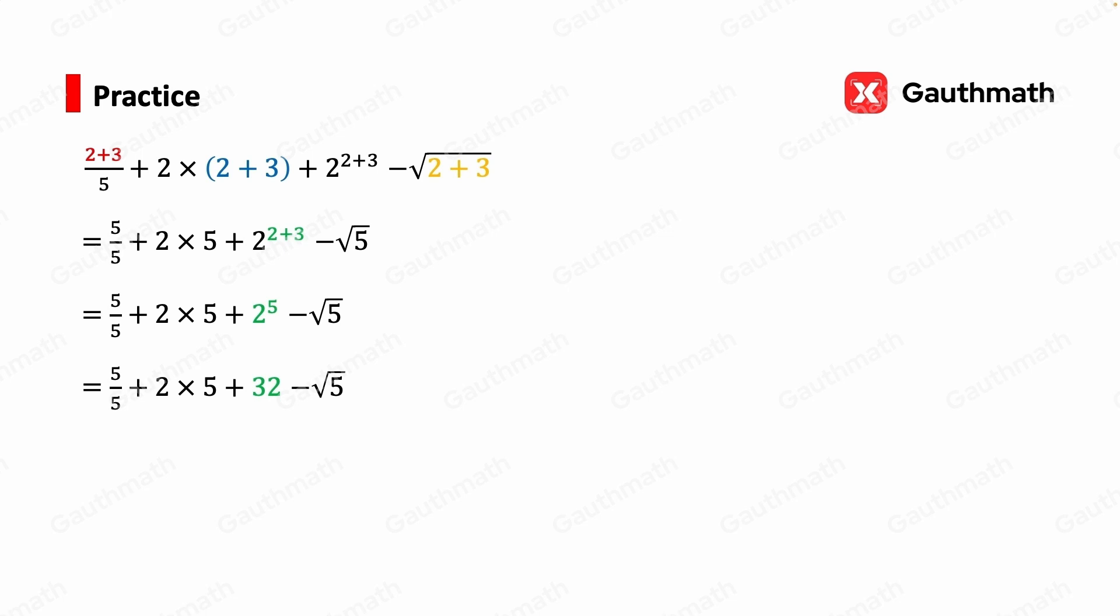And after that, we're going to perform division and multiplication from left to right. And then finally, only addition and subtraction left, we're going to perform them from left to right. Okay, so the final answer is 43 minus square root of 5.